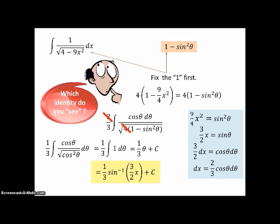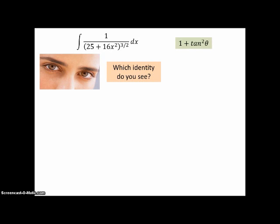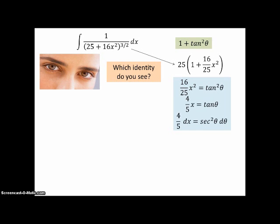What do you see? Which identity do you think we're going to use? It's plus so it's 1 plus tan²θ. Let's fix the 25 first by factoring it out, and then we want 16/25 x² to equal tan²θ. Take the square root, and then compute dx. So dx is going to be 5/4 sec²θ dθ, and now we can substitute. Sec²θ dθ for dx. The 25 is still there. The 16/25 x² becomes tan²θ, and the 3/2 is still there.